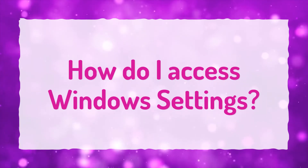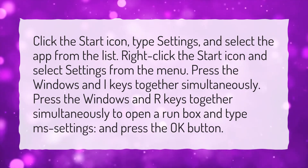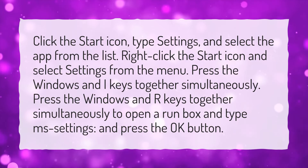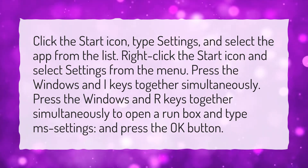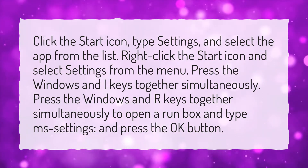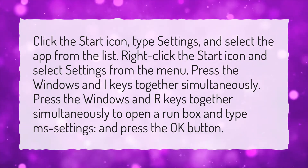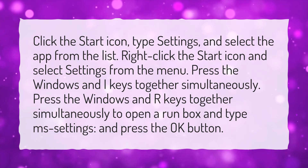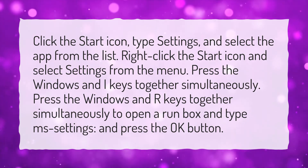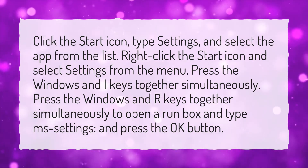How do I access Windows settings? Click the Start icon, type "settings", and select the app from the list. Right-click the Start icon and select Settings from the menu. Press the Windows and I keys together simultaneously. Or press the Windows and R keys together to open a Run box, type "ms-settings", and press the OK button.